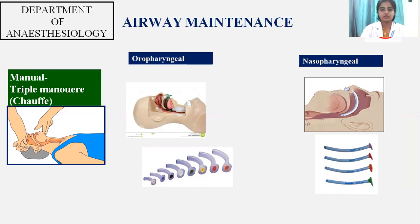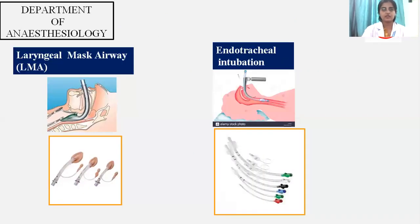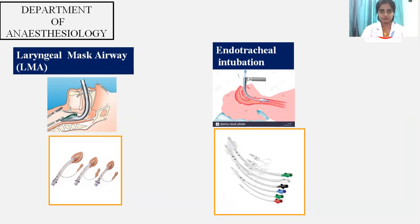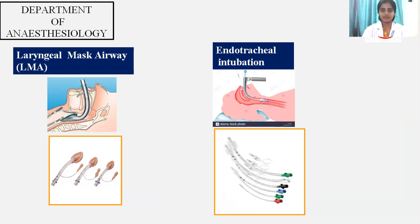As shown in the figure, different sizes of oropharyngeal and nasopharyngeal airways are available. Next we have the laryngeal mask airway. As the name suggests, it sits on the laryngeal inlet and keeps the laryngeal inlet open. The last resort is endotracheal intubation, in which you insert an endotracheal tube via laryngoscopy and keep your respiratory system intact.